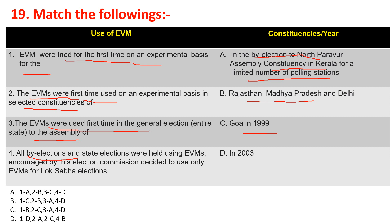All by-elections and state elections were held using EVMs, and encouraged by this, the Election Commission decided to use only EVMs for Lok Sabha elections in 2003. All options are matched correctly, so the correct sequence is A, B, C, D, and the correct option is A.